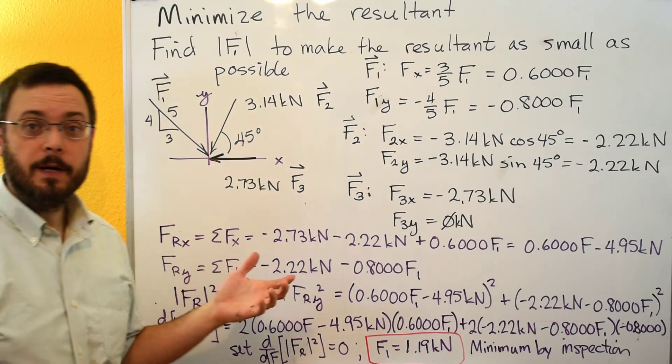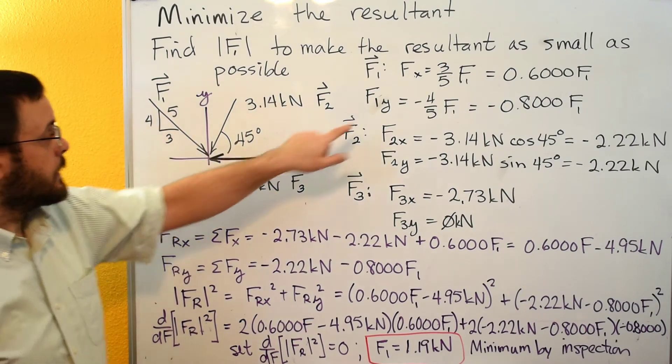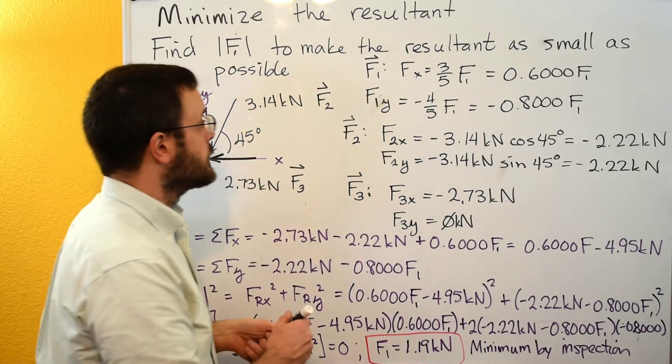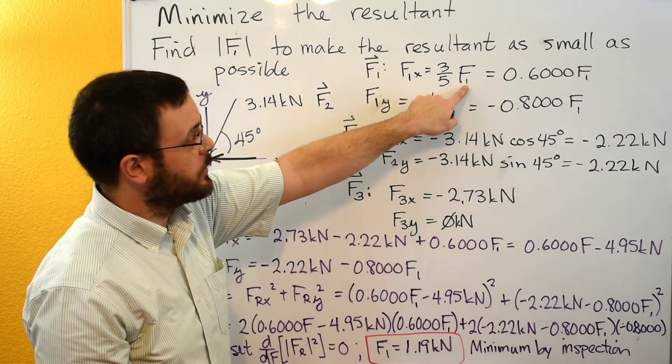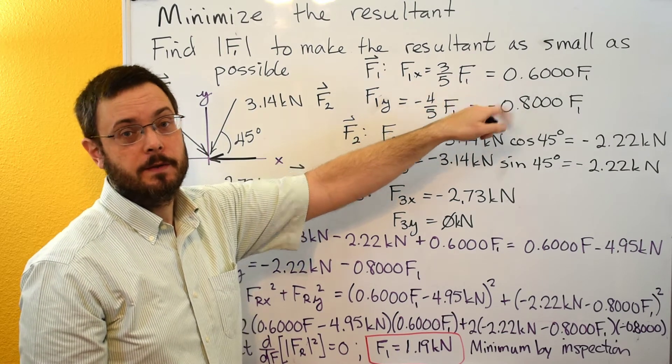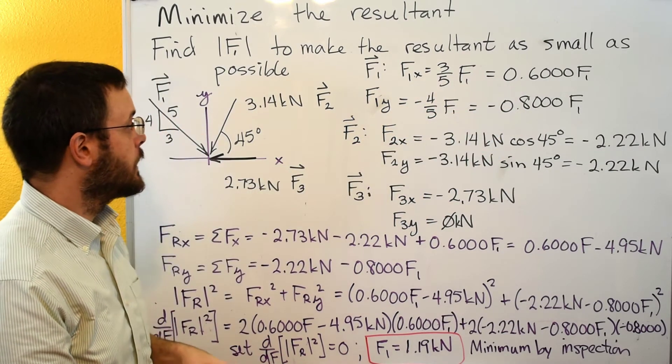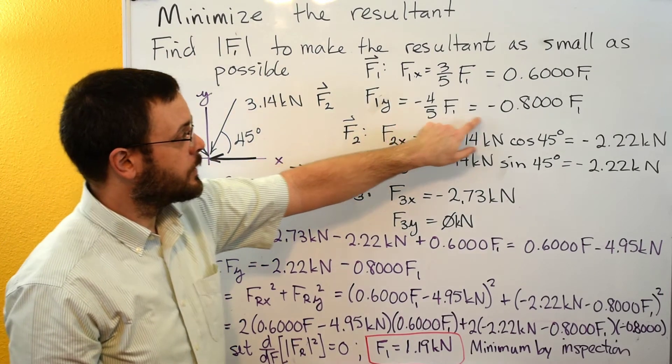We're just going to break them up into their components. So F1 has a 3, 4, 5 right triangle on it. So its X component is going to be 3 fifths of F1, that would be 0.6 times F1 using a decimal instead of a fraction. And then F1Y would be equal to 4 fifths times F1, which gives us 0.8 times F1.